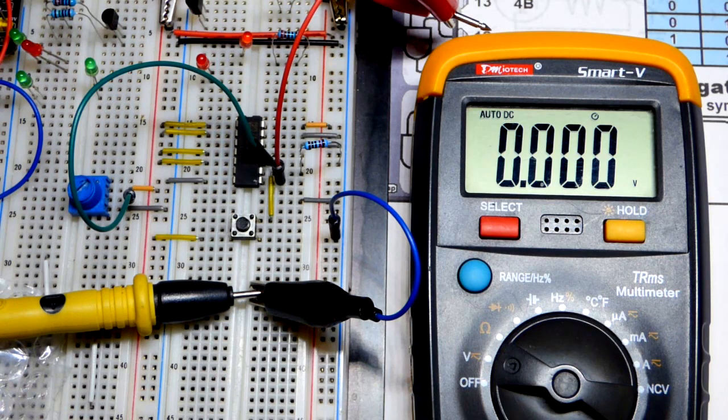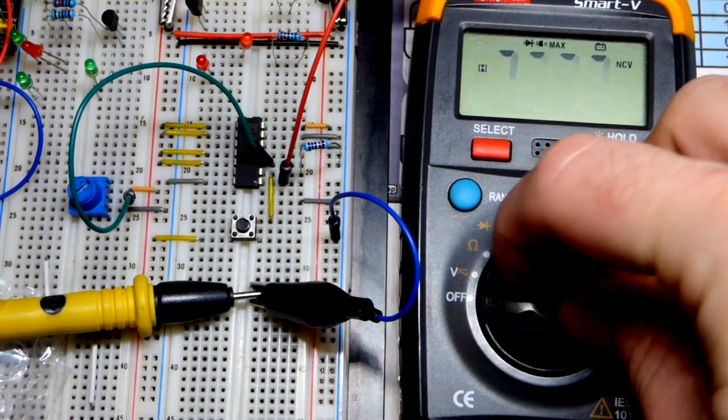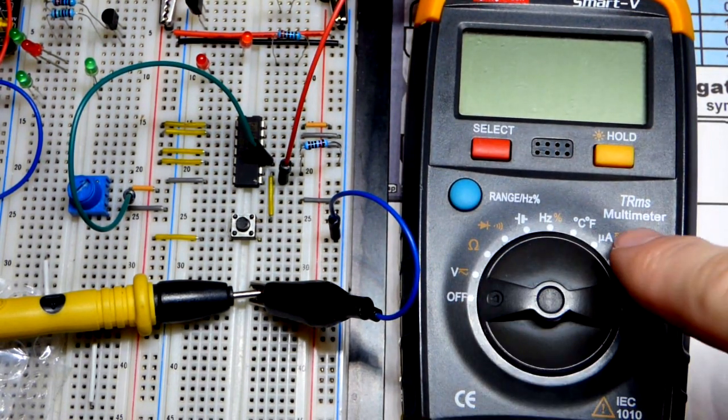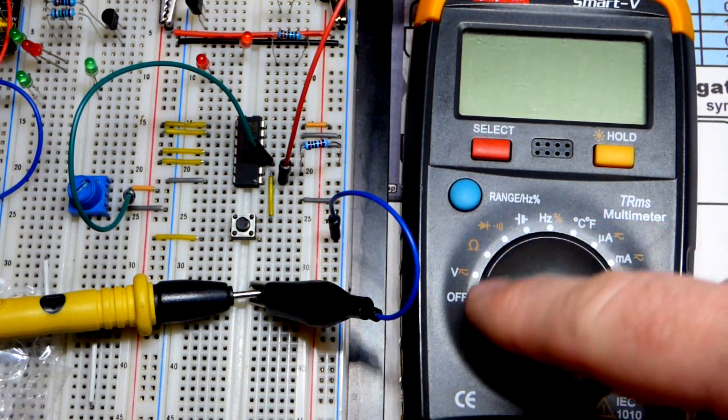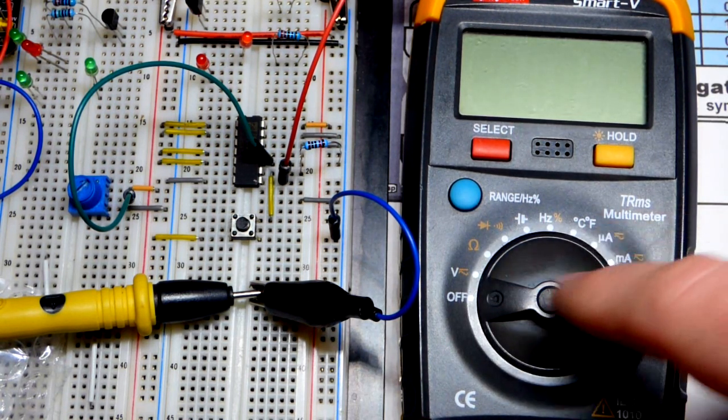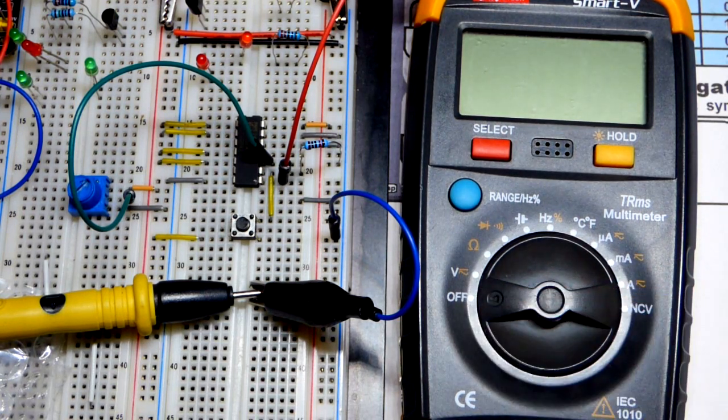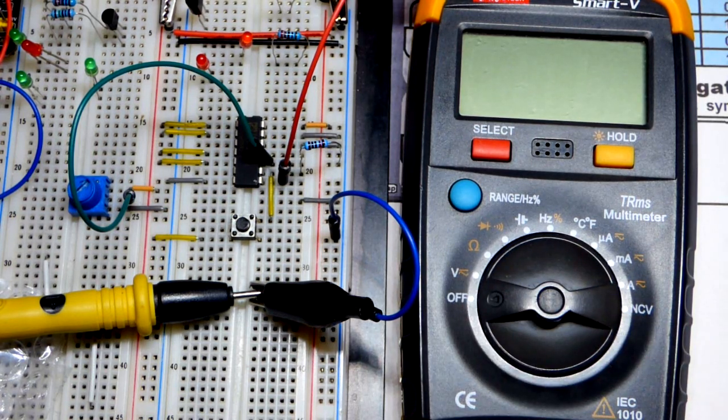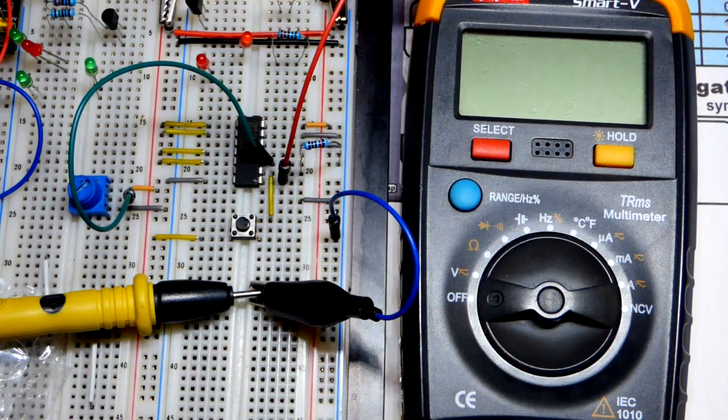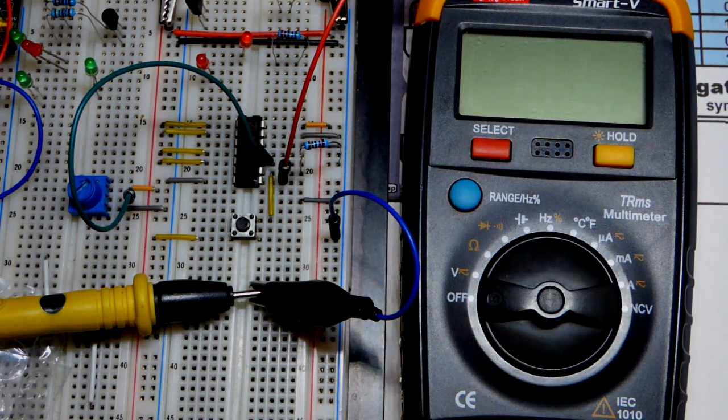So any case, thanks for watching this video. Always make sure you turn off the multimeter, especially if the last setting is a current. You want to get it off current as soon as you're done measuring current. That's the easiest way to damage the meter, trying to measure a voltage source when it's set to a current. But turn the meter off. Check out one of the other videos, make sure you click like, subscribe, the bell, all that good stuff. I'll see you in the next video.